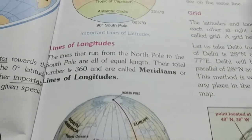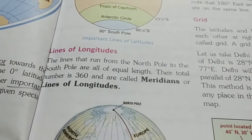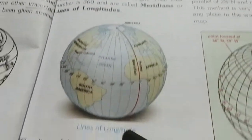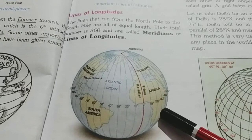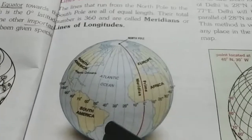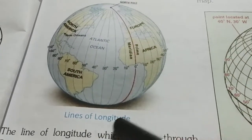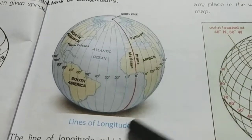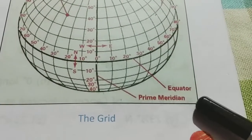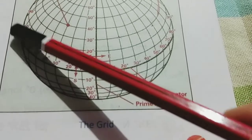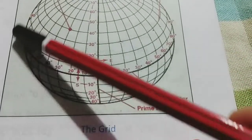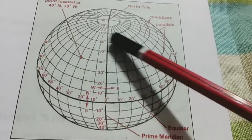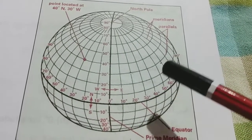Next, we will see lines of longitudes. Lines of longitudes are lines that run from north to south — they are called longitudes. There are many lines. These are all the longitudes. The equator divides the globe into two equal parts.